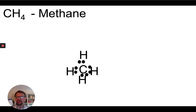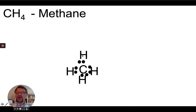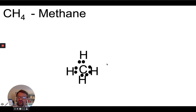Looking for octets in methane: carbon has two, four, six, eight electrons. And each hydrogen has two — this one has two, this one has two, this one has two, and this one also has two. Those electrons are holding together this molecule. So that's the Lewis dot structure for methane.